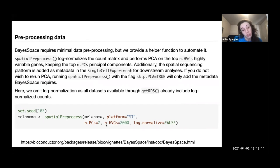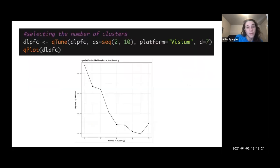You can choose the number of highly variable genes you want, and you can also choose the number of principal components that you want to use. So then we do the Qtune function, which is going to run the clustering algorithm for a range of clusters. You can choose this range, and then D is the number of PCs.